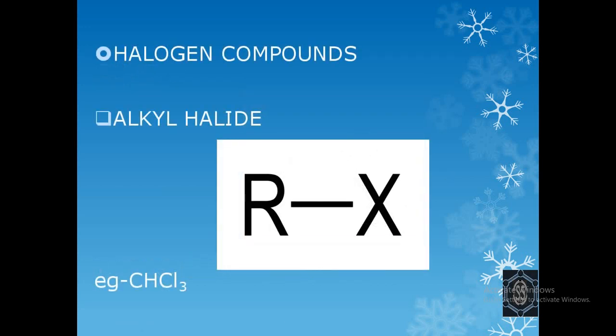Next category is halogen compounds. First is alkyl halide. In this, the hydrogen is replaced by a halogen group. Here, X is the halogen present. X can be fluorine, chlorine, bromine, or any halogen.